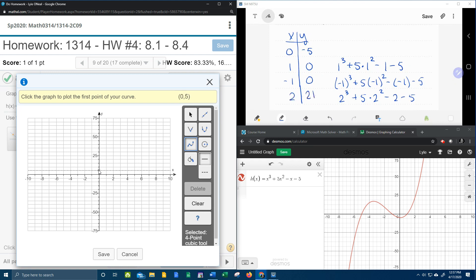So now let's plot those points. All right, here we go. Zero, negative five. And again, you can see that I'm at zero, negative five by looking in the upper right-hand corner. We've got one, zero. One, zero. Negative one, zero.